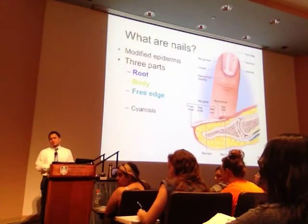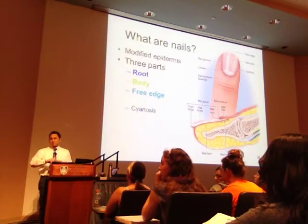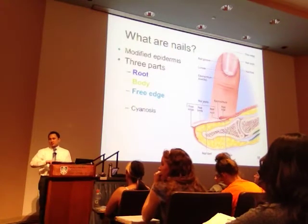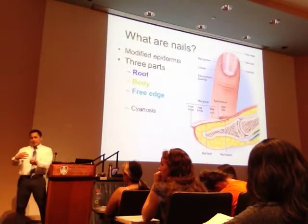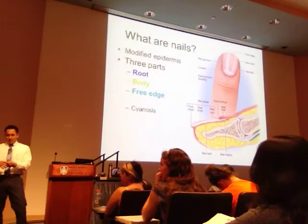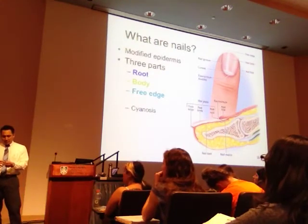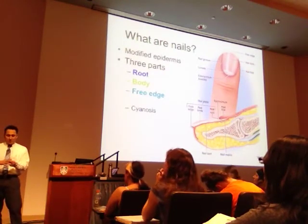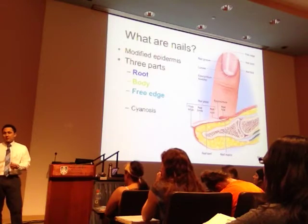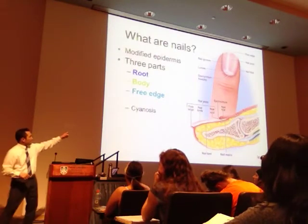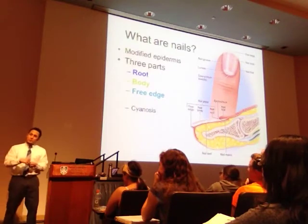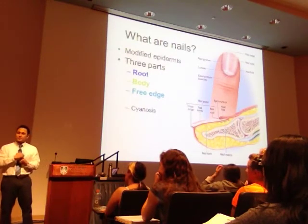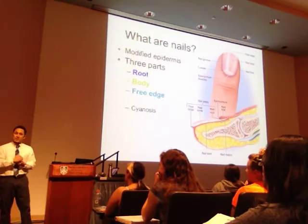Why does a nail turn blue when you smash it? Because you're rupturing blood vessels underneath the nail, so it hemorrhages out and forms a clot. If you've traumatized it enough, the nail may fall off. If you didn't damage the root, it will grow back. If you did damage the root, you probably won't get a nail back. That's the difference.